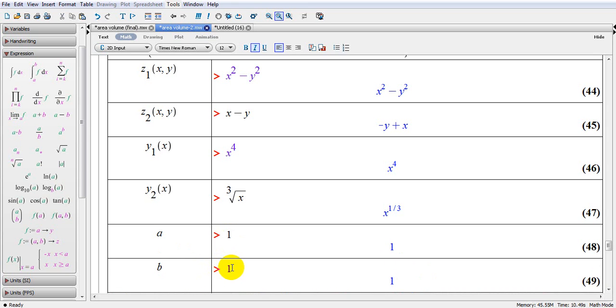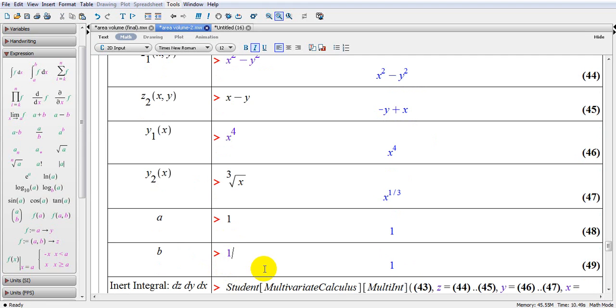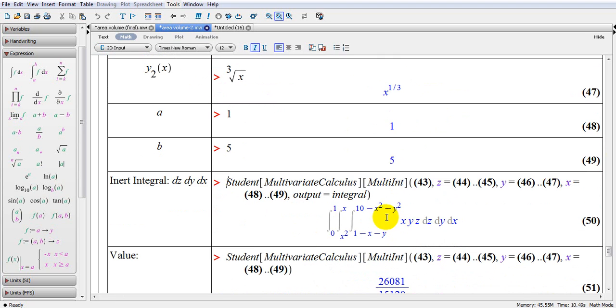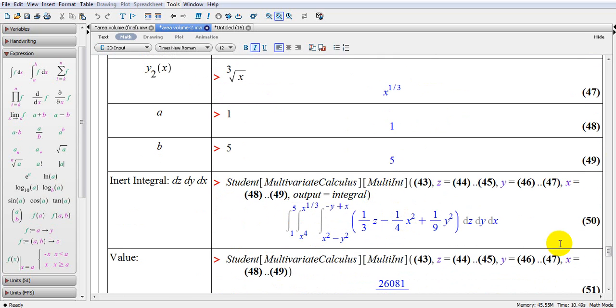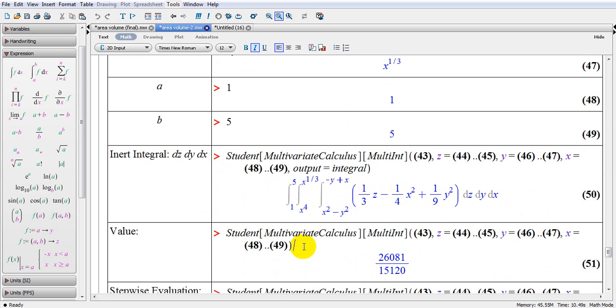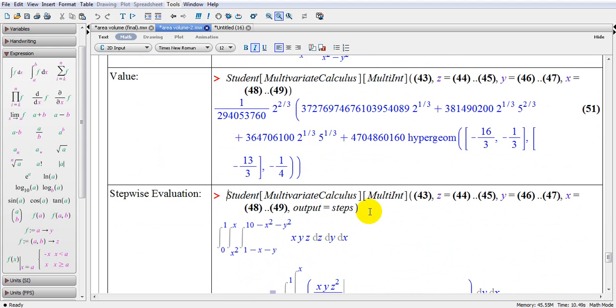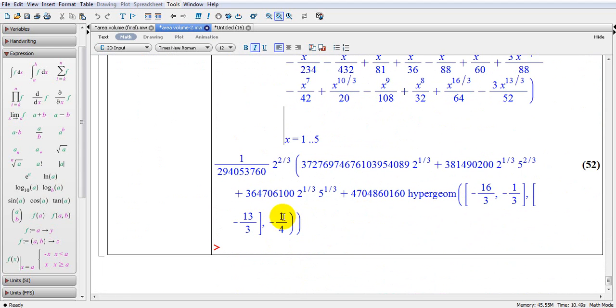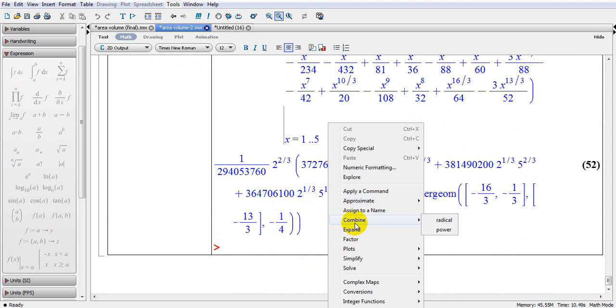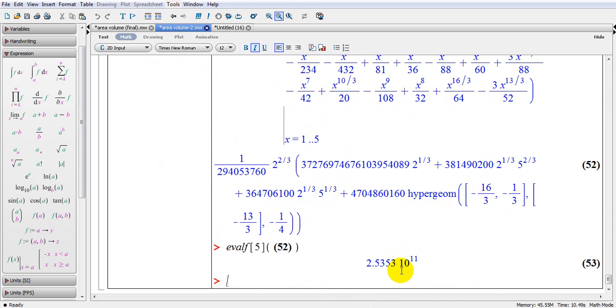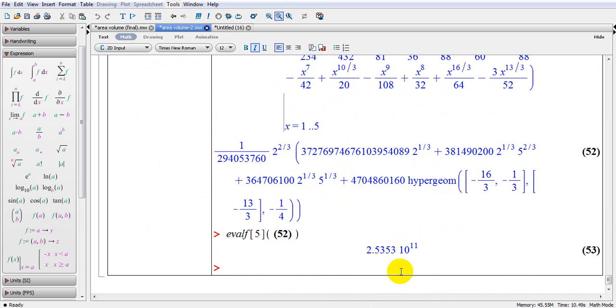And finally X changes from 1 to 5. I reemphasize each time you have to press enter to get the value here. This is correct. Then I go to this step, enter. And then here, enter again. Finally stepwise evaluation, and you go to approximation 5 decimal and this is the same answer, 2.5353 times 10 to the power 11.